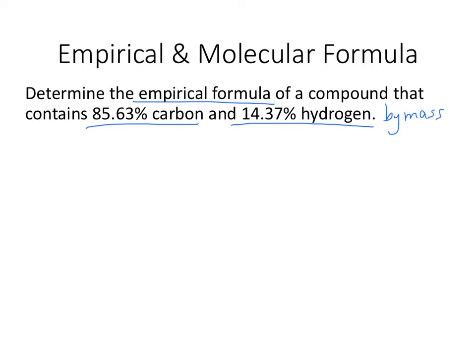But a formula is the ratio of moles, not the ratio of mass. So we're actually going to have to convert these masses into moles. And I know they don't look like masses, but 85.63%, if you had an entire sample that weighed 100 grams, 85.63 grams of that would be carbon.